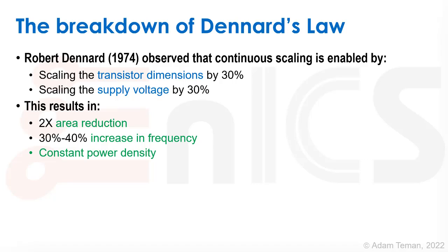First, we get a 2x area reduction: scaling dimensions by 30% means 0.7 in length and 0.7 in width, which equals 0.49 — roughly half the area. We also get a 30–40% increase in frequency, giving higher performance. And one of the most important observations of Dennard is that the power density stayed constant.